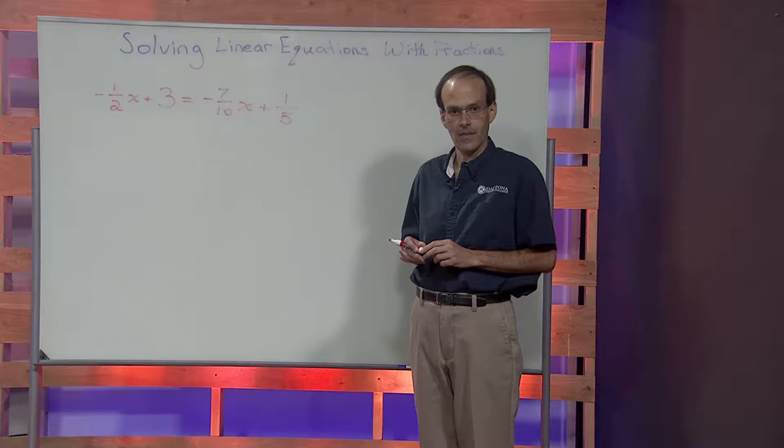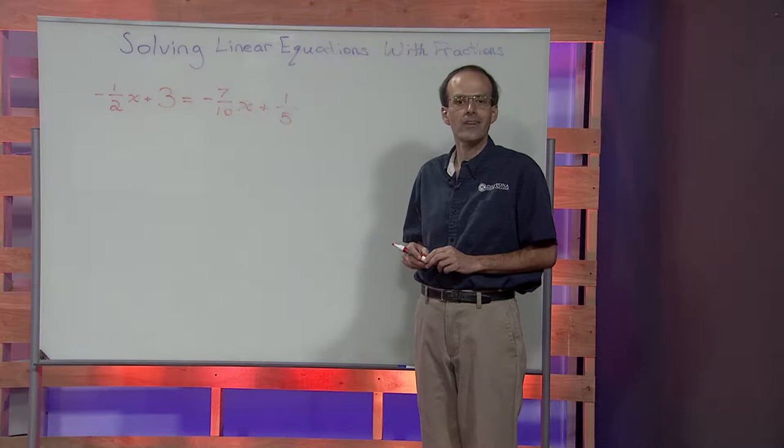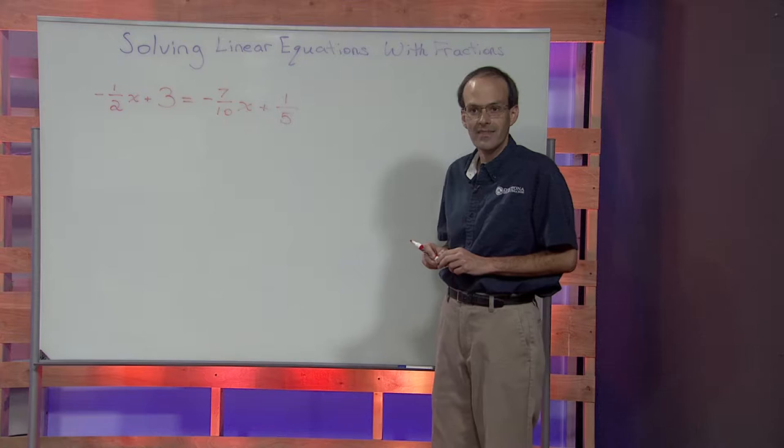In this lesson, we'll see how to clear fractions in a linear equation and then solve it. In particular, we'll look at the equation negative one-half x plus three is equal to negative seven-tenths x plus one-fifth.